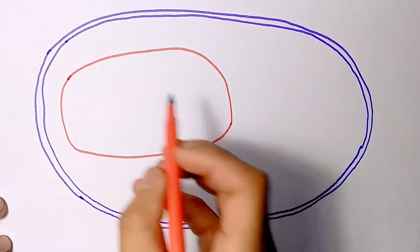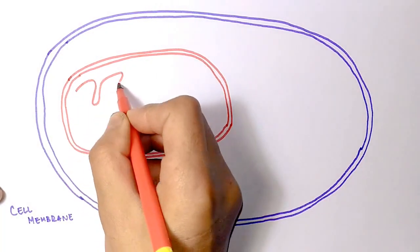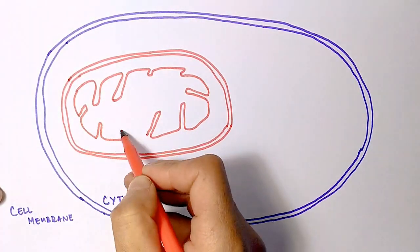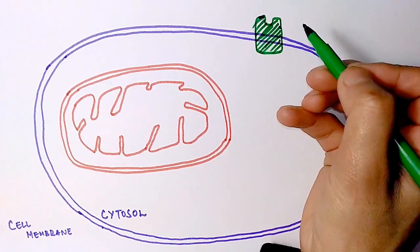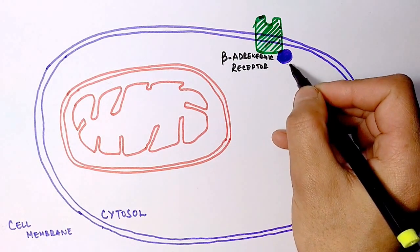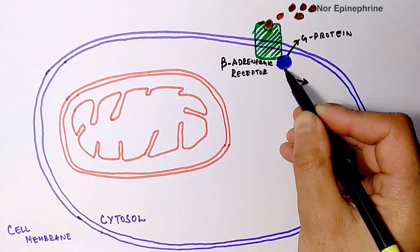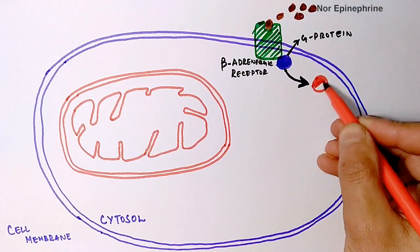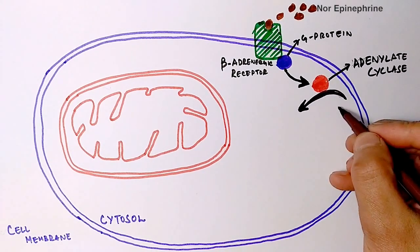Now we are going to see how it happens diagrammatically, by drawing a cell with mitochondria inside. This is brown adipose tissue, which has lots of mitochondria. The BAT cells have beta-adrenergic receptors, which are in turn linked to G protein. Non-shivering thermogenesis is controlled by the autonomic nervous system, which releases norepinephrine molecules near the BAT site. These norepinephrine molecules bind to beta-adrenergic receptors and activate G protein.